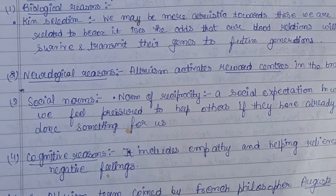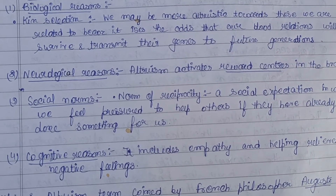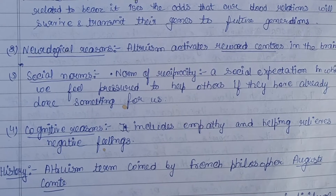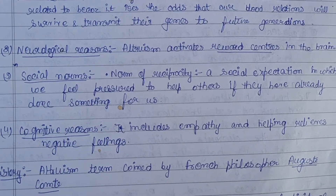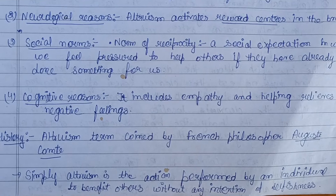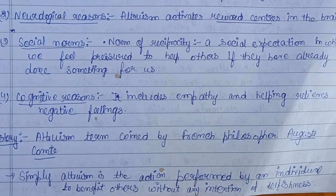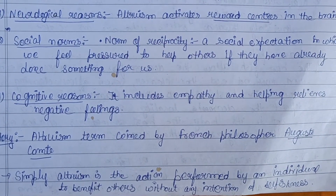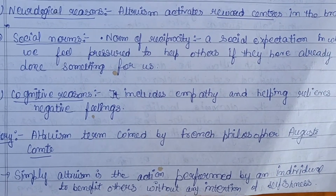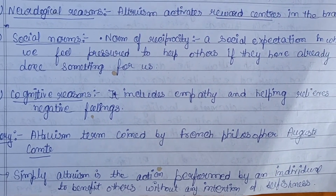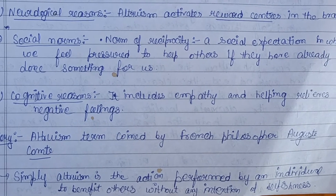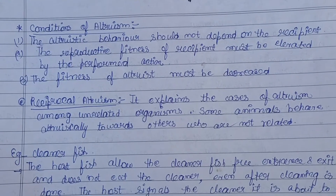The history of altruism: the term 'altruism' was coined by the French philosopher Auguste Comte. It refers to an action or act performed by an individual to benefit others without any intention of selfishness. Generally, in the case of animals, we can observe this.